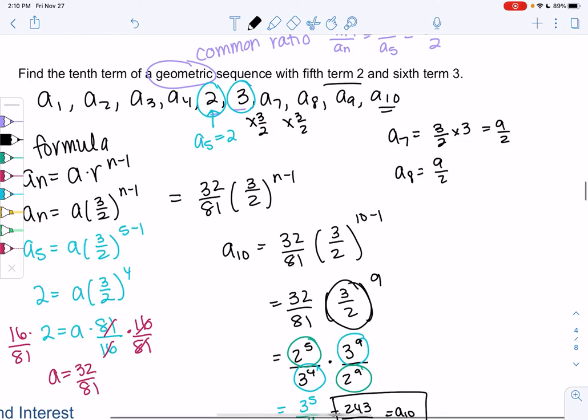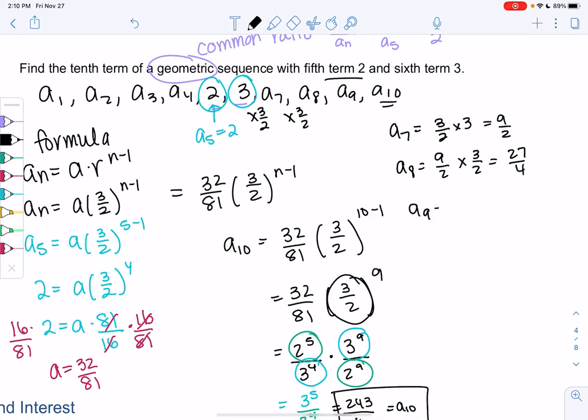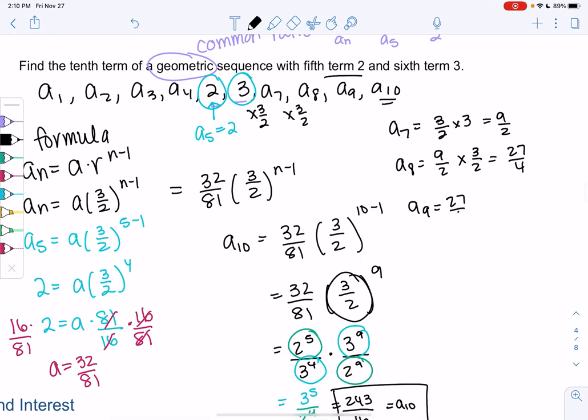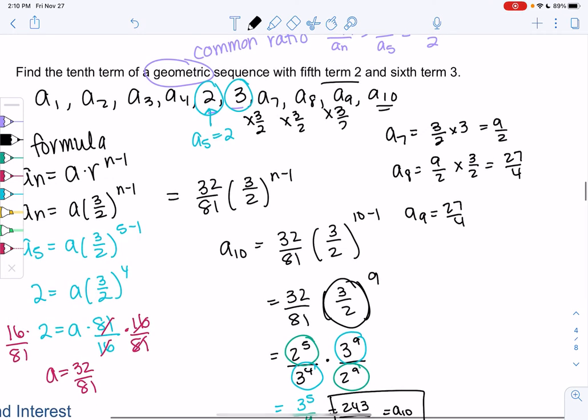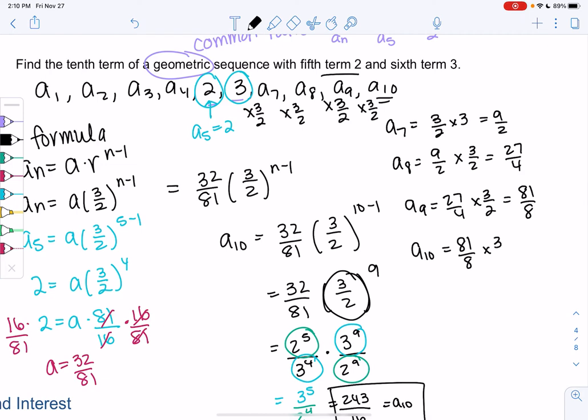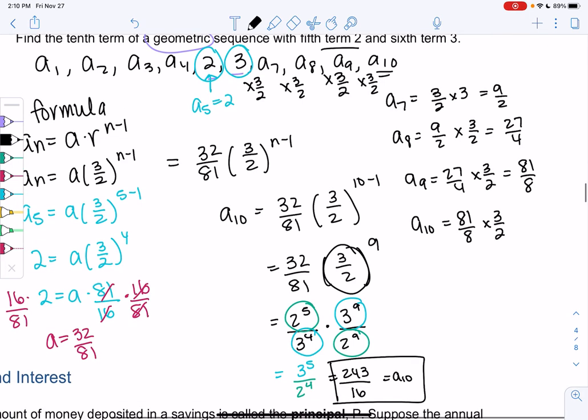So then a_8 would be nine halves times three halves, or 27 over 4. Then a_9, same idea—we'll take the previous term times three halves. So 27 fourths times three halves, which is 81 over 8. Then a_10, again times three halves one more time. We'll do 81 over 8 times three halves, and we should get 243 over 16. So you decide what makes more sense to you.